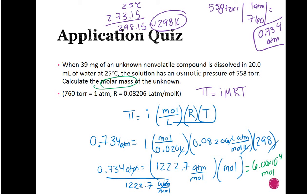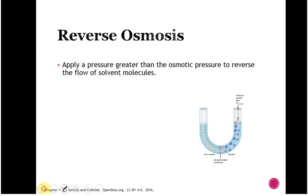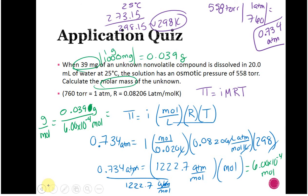Now find the molar mass: convert 39 mg to 0.039 g, then divide by moles: 0.039 g ÷ 6.00 × 10⁻⁴ mol ≈ 65 g/mol.